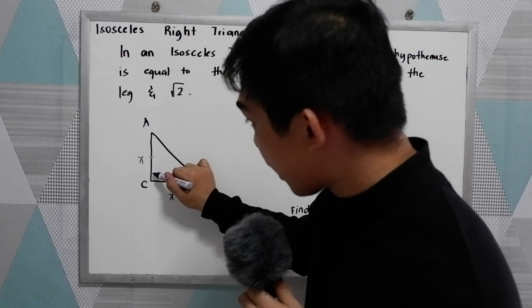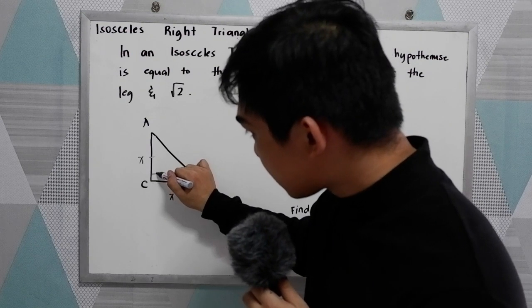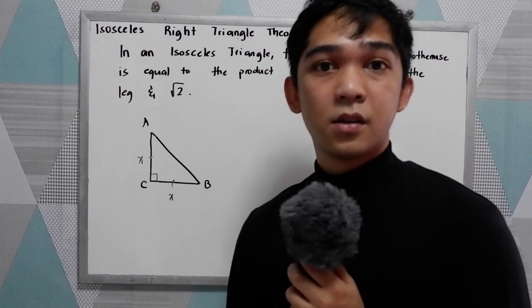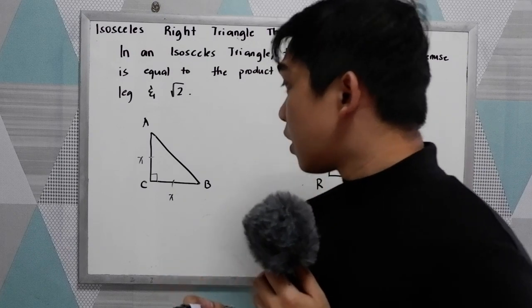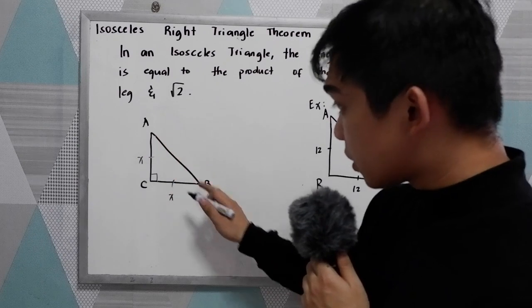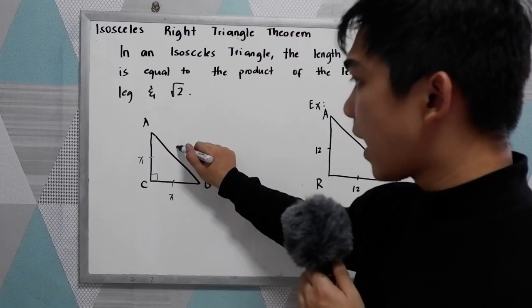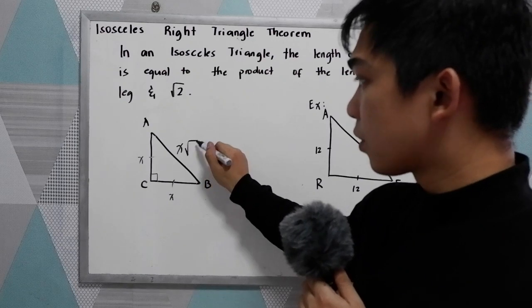In an isosceles right triangle, we have a 90-degree angle, and our legs are equal. To get the hypotenuse, we just need to multiply the leg by square root of 2. So our leg is X, and the hypotenuse is X√2.